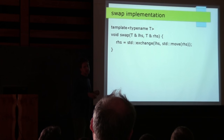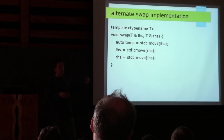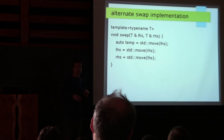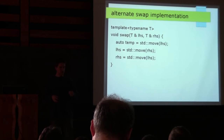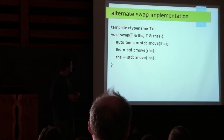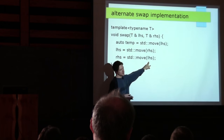Let's consider what swap looks like. This is a C++14 version using std::exchange, or the more familiar C++11 version that moves into a temporary variable, moves right into left, moves left into right. This is the default implementation of std::swap. A question was raised: shouldn't the last line be std::move(temp)? Yes, sorry — this should say std::move(temp).